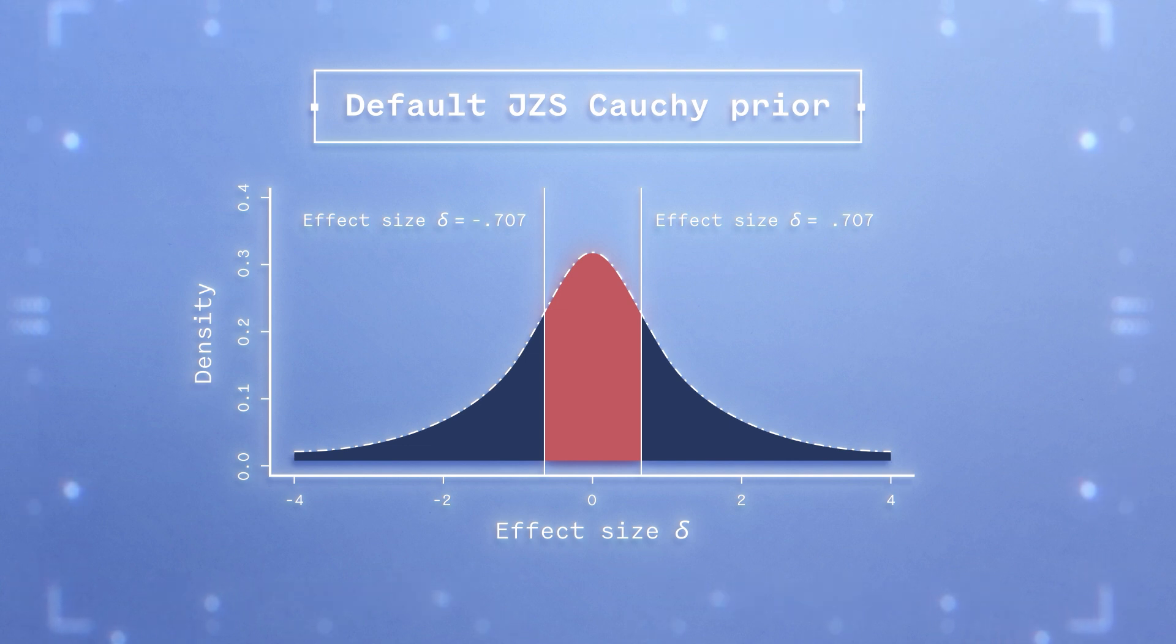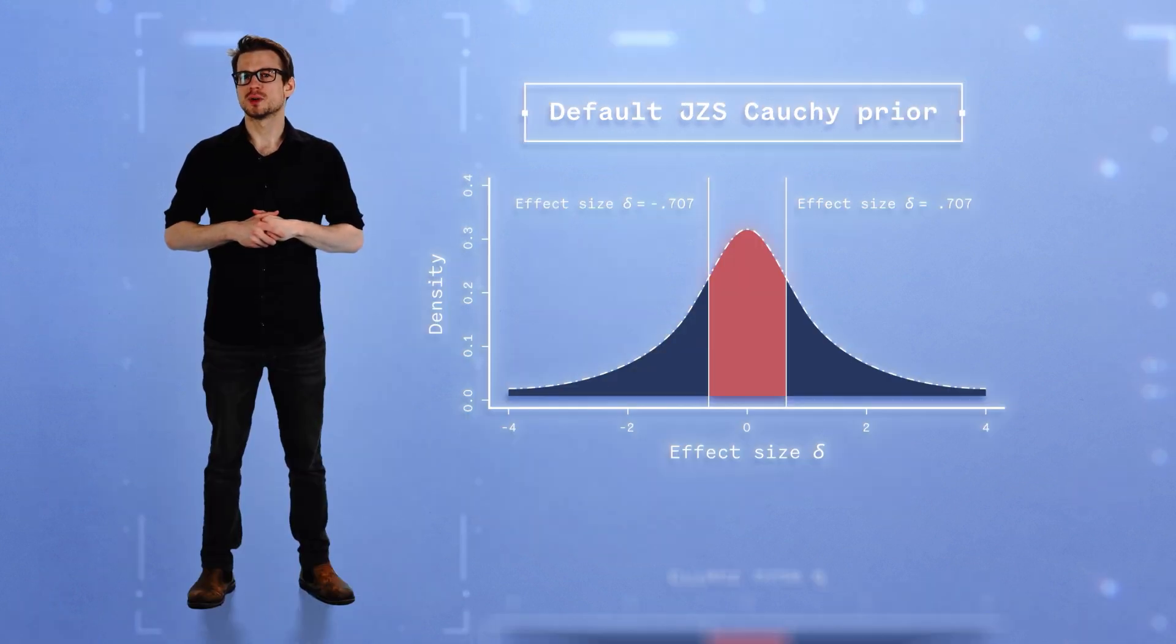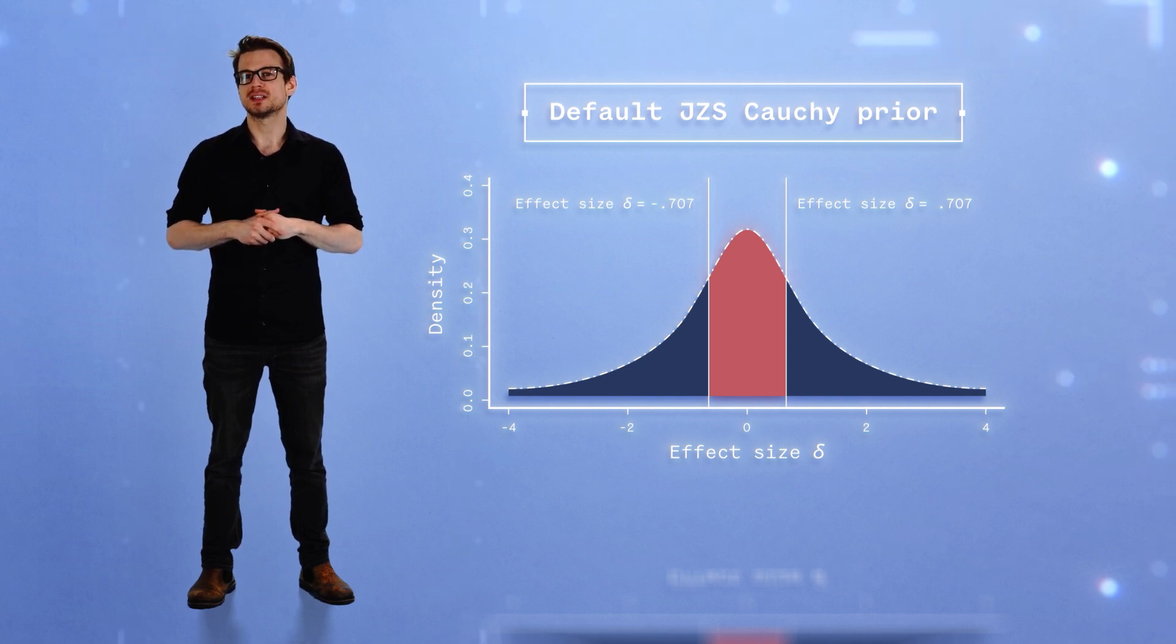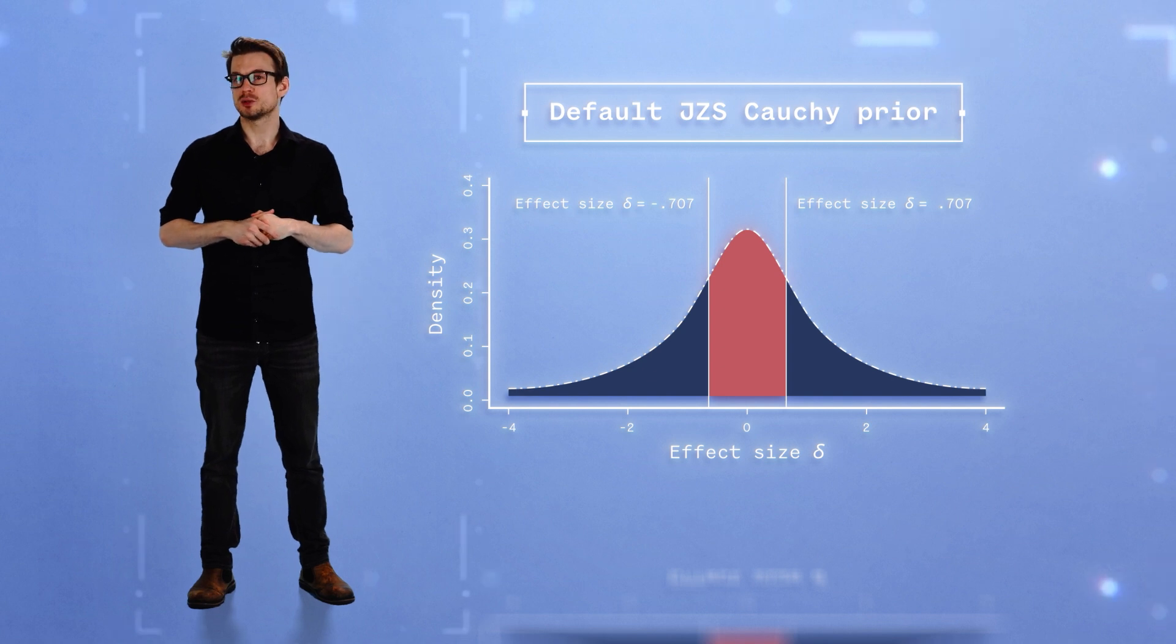By adjusting the scale parameter, you can set the prior to the range of expected sizes under your hypothesis. This is particularly important when small effect sizes are to be expected, such as ranging from 0.20 to 0.30. If you use the default 0.707 value while you expect such small effect sizes, your analysis might easily provide evidence for H0 or provide no evidence at all. Detailed explanations on why this is the case can be found in the links provided in the description of this video.